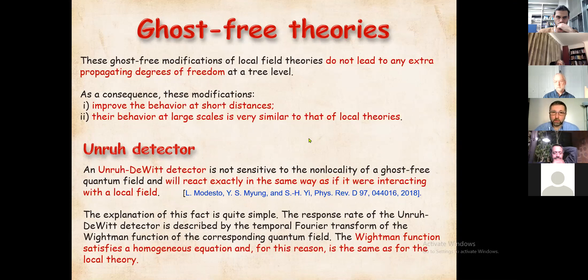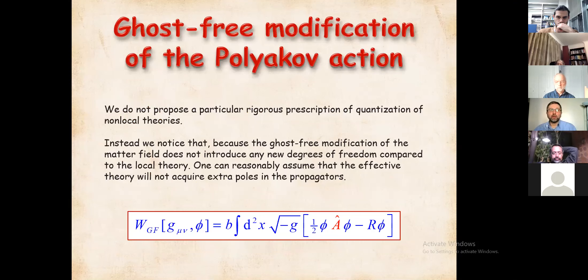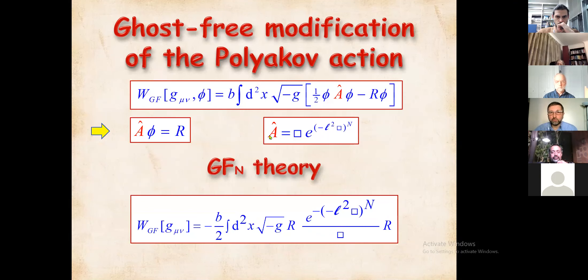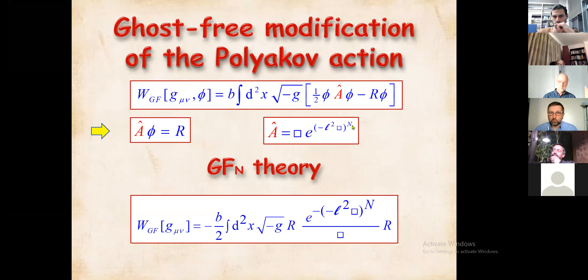Let us now consider the ghost-free modification of the Polyakov action. We substitute the box operator with a non-local operator A, and we use a localized version of the Polyakov action with a non-local ghost-free modification using this operator. We call this the GFn theory, where n is the order. These theories have very good properties, at least in the spatial direction — everything is well-behaved.